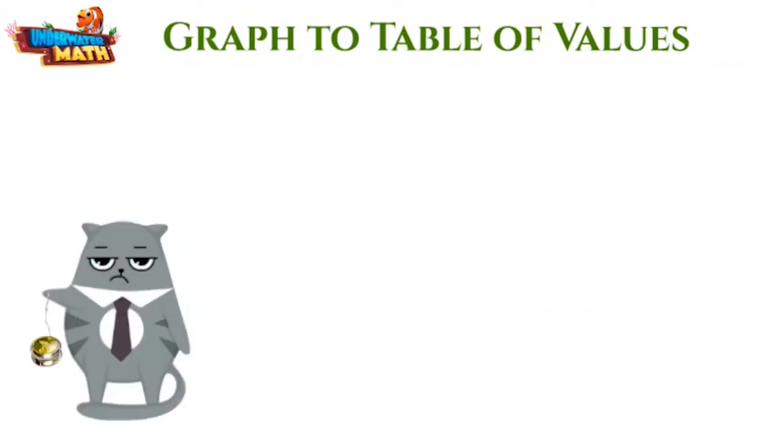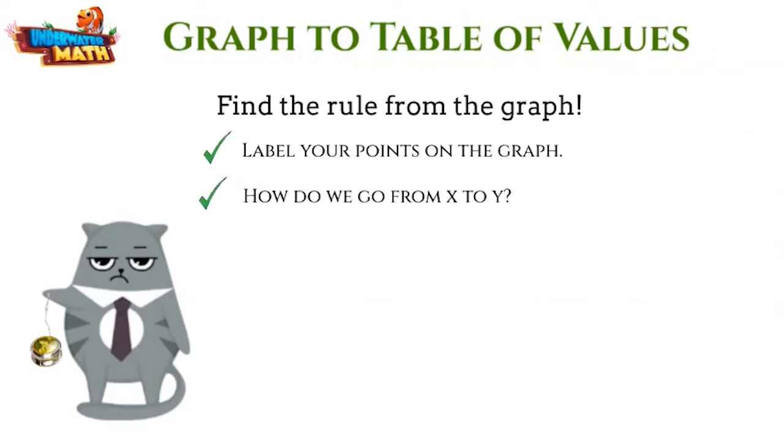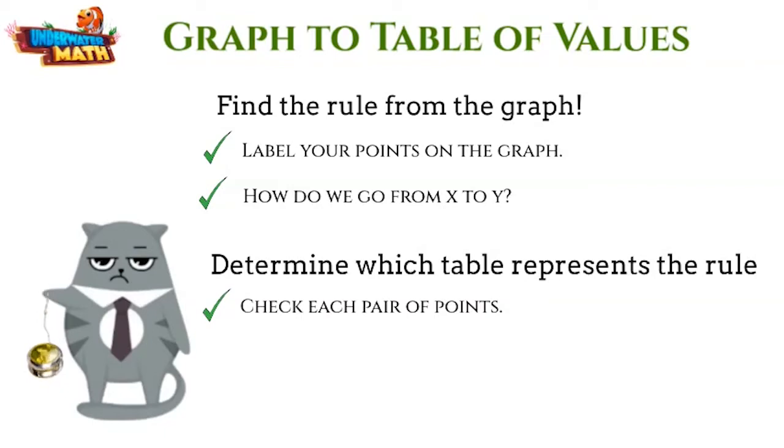First, you find the rule from the graph. Label the points and figure out how to go from x to y. Then find which table represents that rule you found. Check each pair of points to make sure the rule works every time.